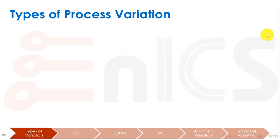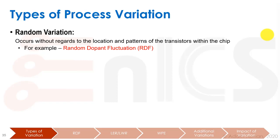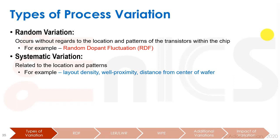We'll further dive into categorization of process variations, because we're not usually going to know which lot our die came from, and so forth. We usually discuss two types of variation. One is random variation, which occurs without regard to the location and patterns of transistors within the chip — for example, random dopant fluctuation. The other is systematic variation, which is truly related to location, patterns and factors — something we can sometimes even measure, such as the density of the layout in a certain area, the proximity to the edge of the well, or the distance from the center of the wafer.